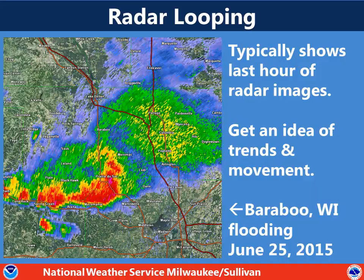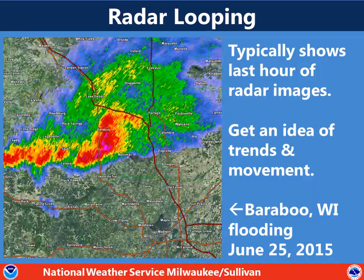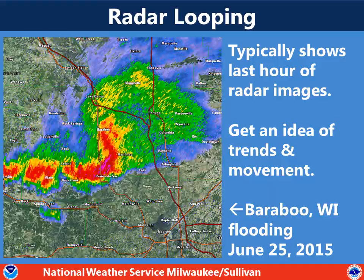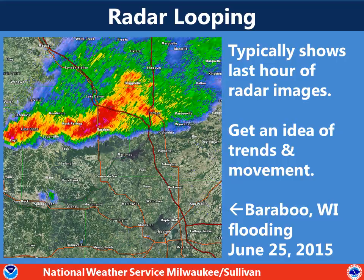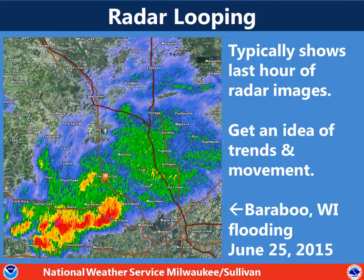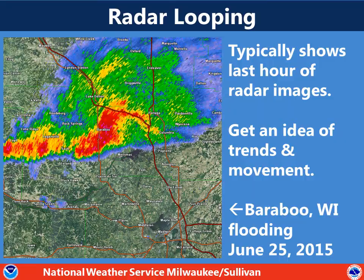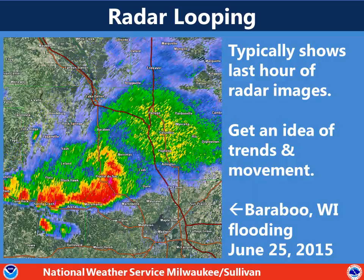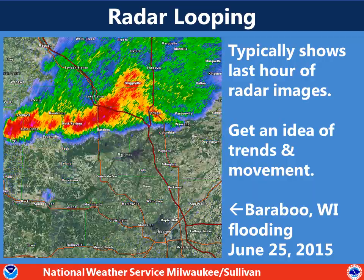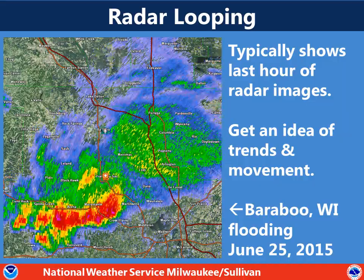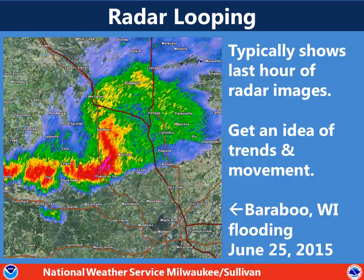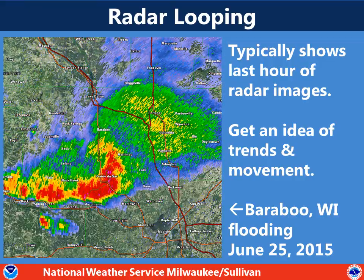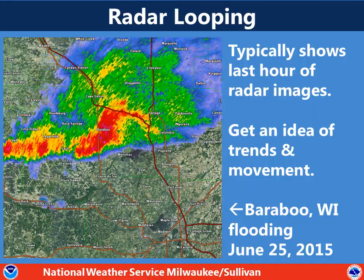It's important when we're looking at radar images to loop about the last hour or so, because it gives us a better idea of how the storms are moving and where the heaviest precipitation is falling, and if it might be falling over the same place for a longer period of time. This particular loop is showing an example from a couple of years ago when Baraboo, Wisconsin had some flooding. You can see the heaviest precipitation fell over Baraboo, which is kind of in the middle of this radar here, over a fairly long period of time. And we can see this just by looping the radar.